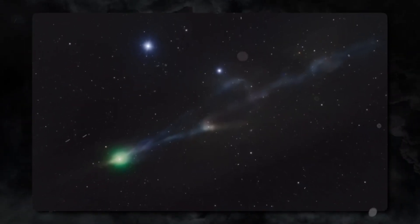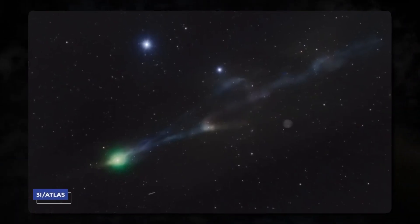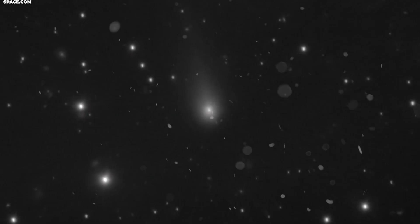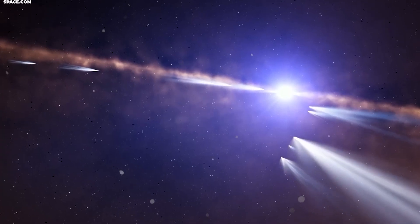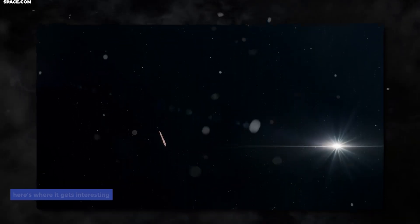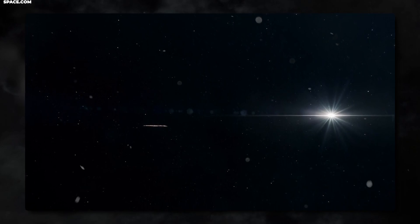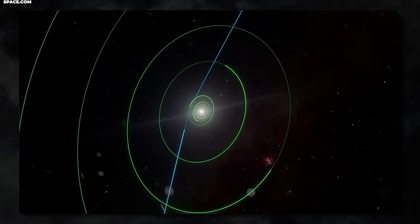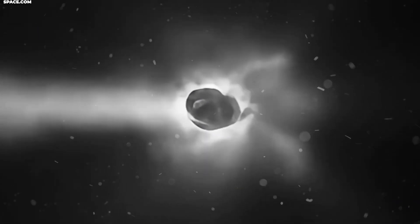Let's set the record straight first. While searching for information about 3I/ATLAS, you might get confused because there's actually no confirmed object with exactly that designation. But here's where it gets interesting. There are two confirmed interstellar objects that have visited our solar system, and both of them revealed shocking surprises that nobody expected.